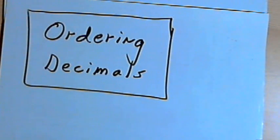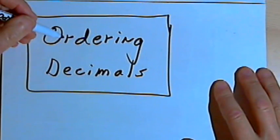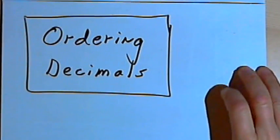This video is provided as supplementary material for courses taught at Howard Community College. In this video I'm going to talk about ordering decimals. This is a pretty easy process. Here's how it goes.